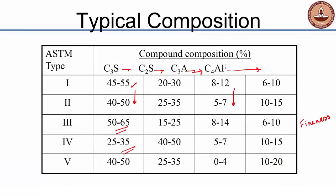Type 4 or low heat cement requires reducing the amounts of compounds that create the maximum heat — those are C3S and C3A. So C3S content is very low and C3A content is also low, causing C2S to be much higher and C4AF to also be higher compared to ordinary Portland cement. C2S does not gain strength very fast; it gains strength very slowly.